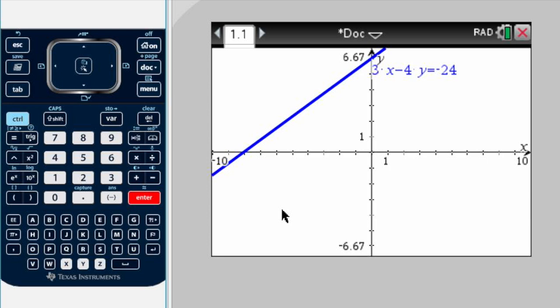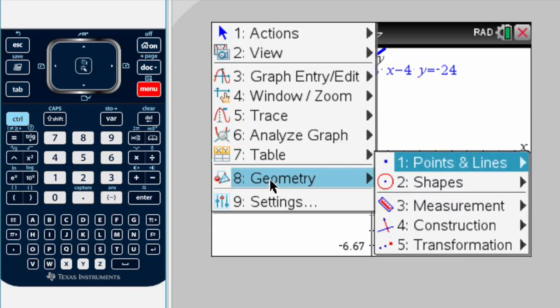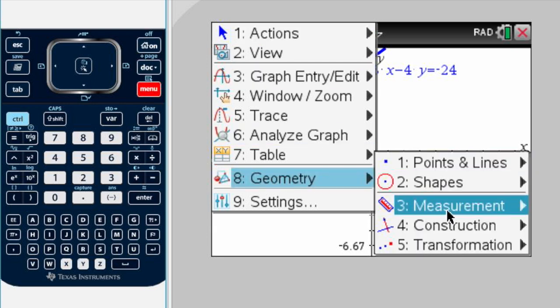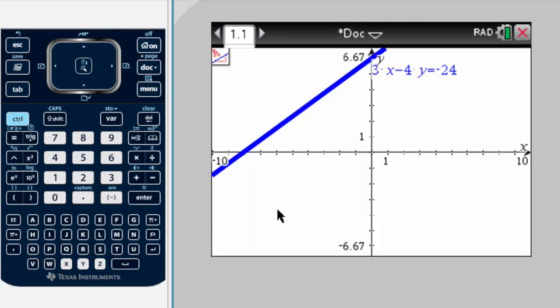At this point, to find the slope, we press menu, go to number 8 geometry, then measurement, and slope. Once we do that, we need to hover over the line and double-click. This is the slope of our function.